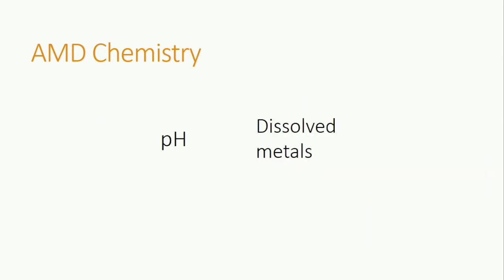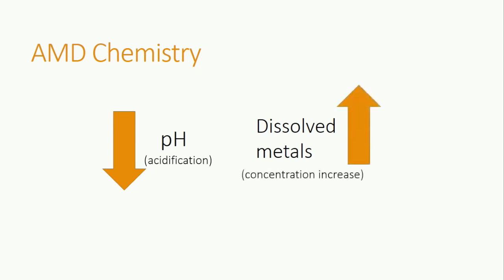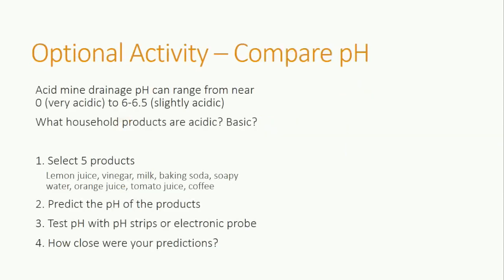The sulfuric acid produced in the reaction lowers the overall pH of the stream, which then increases the concentration of dissolved metals within the stream. Streams affected by acid mine drainage can have a pH as low as zero, meaning very acidic, to a pH of 6.5, meaning only slightly acidic.